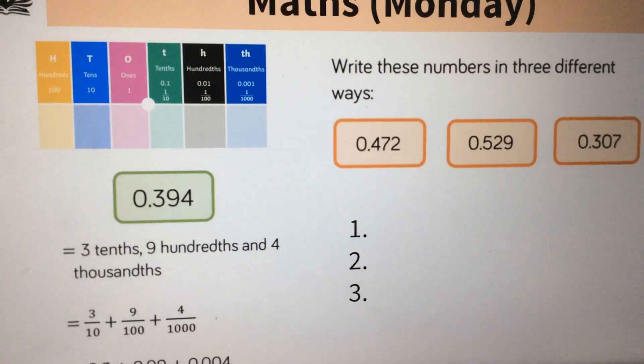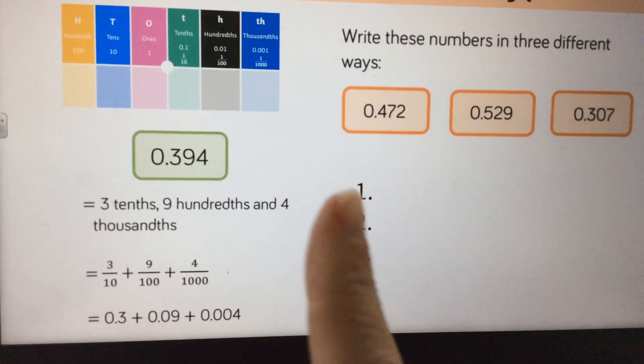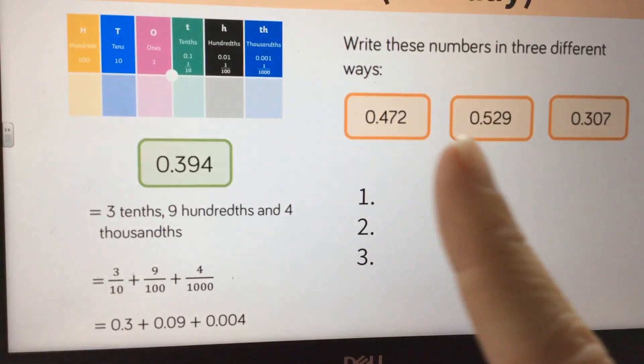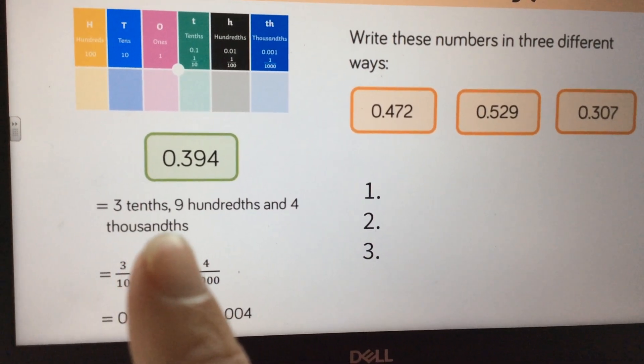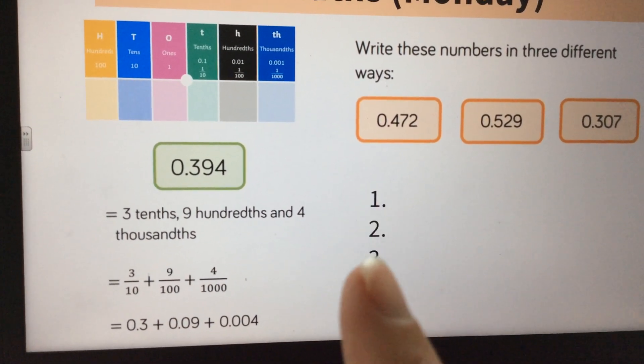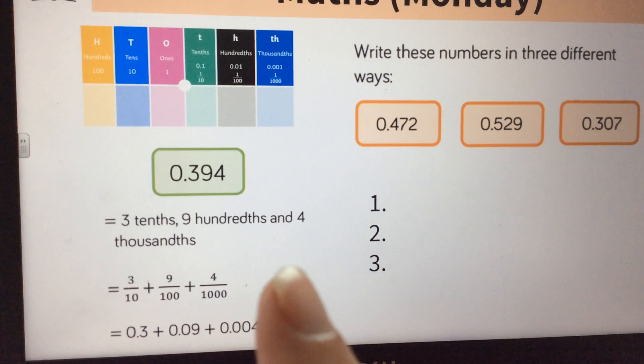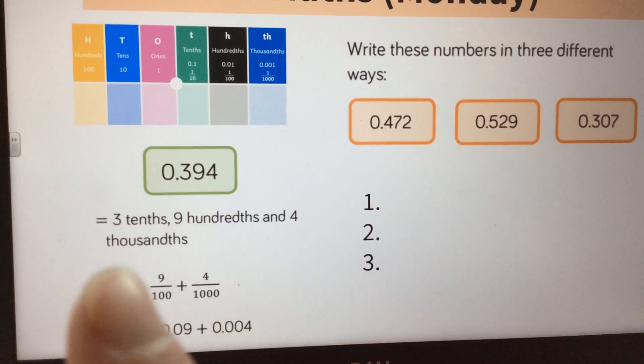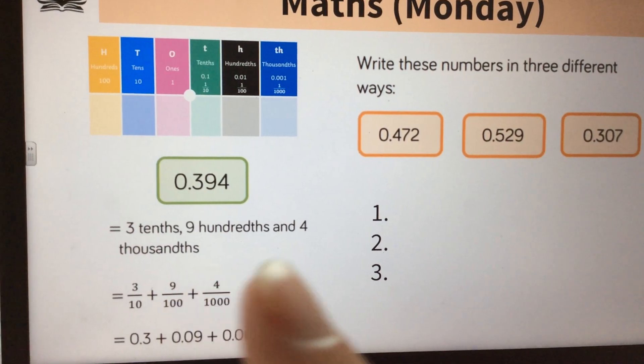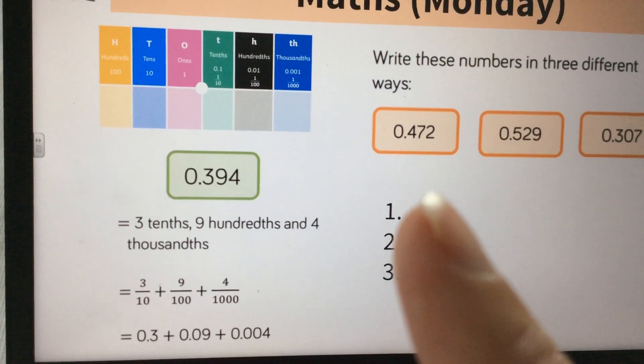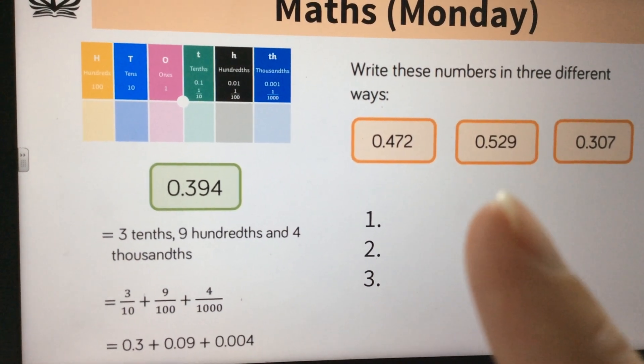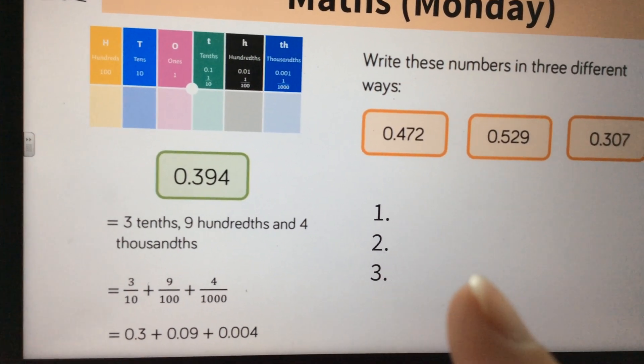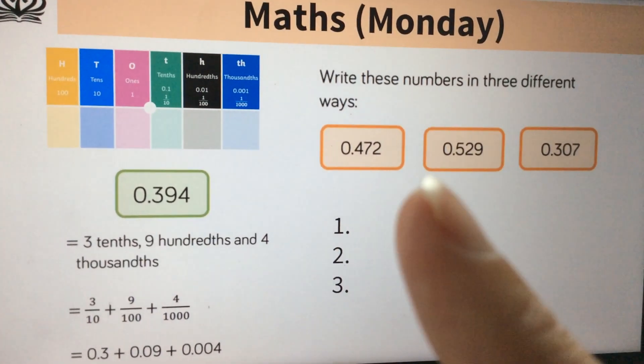Don't forget to double-check as well. Right, the next one, you've got, this is your example which you're going to be using for each of these that you do on your own. So here we have our number, just like we have here. And then there are three different ways to write that number. And that's what you have to do for each of these ones. And you need to use these as a template to help you. So this is 0.394. We can write that as three-tenths, nine-hundredths and four-thousandths. So for this first one, you can do exactly the same. Four-tenths, seven-hundredths and two-thousandths. Then use the second one with the fractions for the second one. And the third one with the decimals for your third one. And use that same structure there for each of those three numbers.